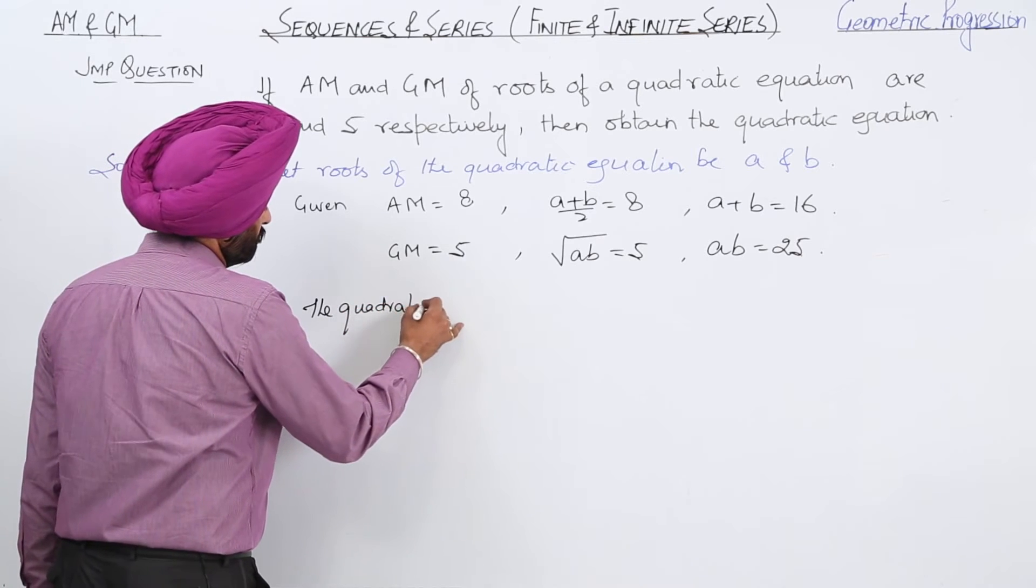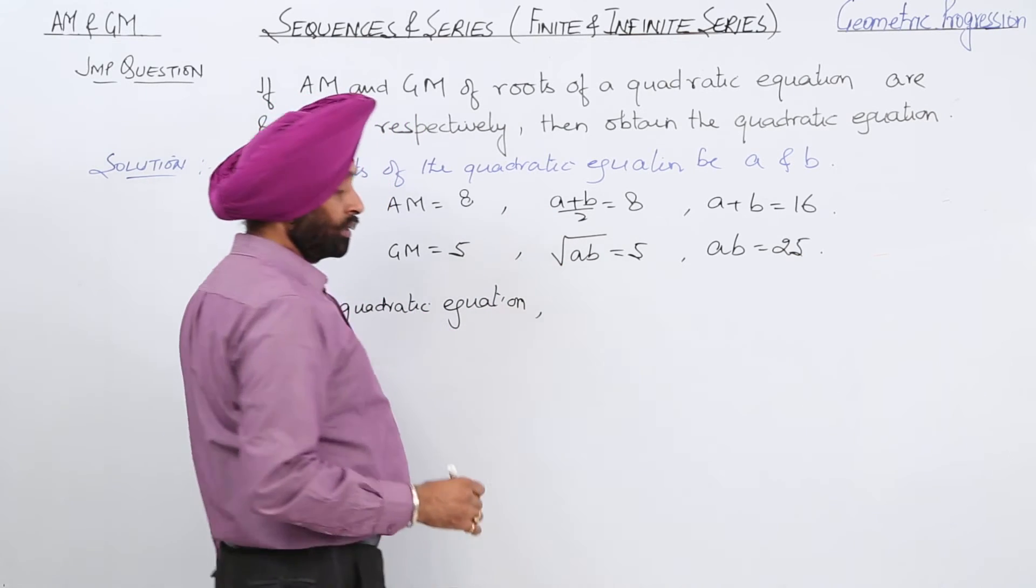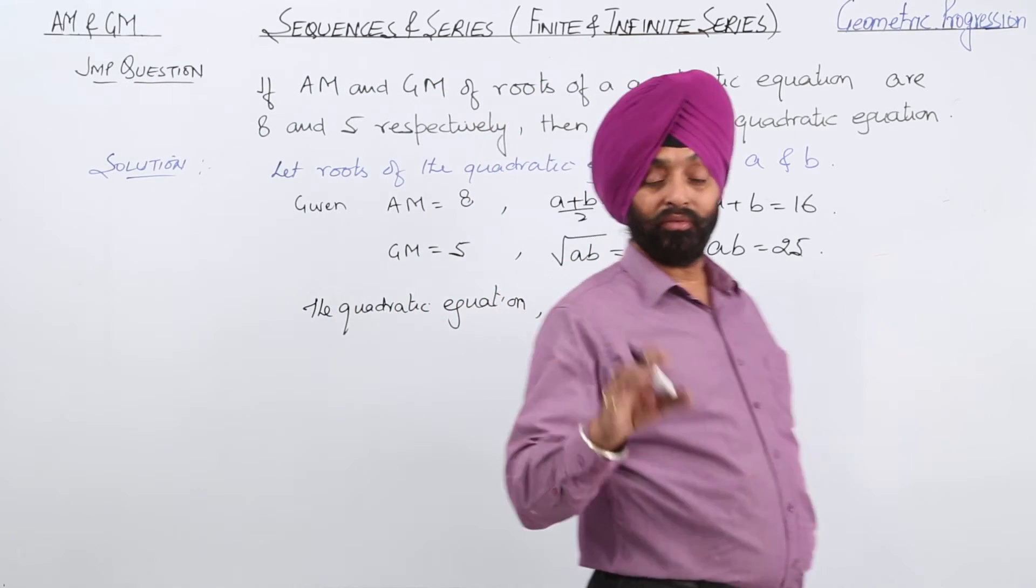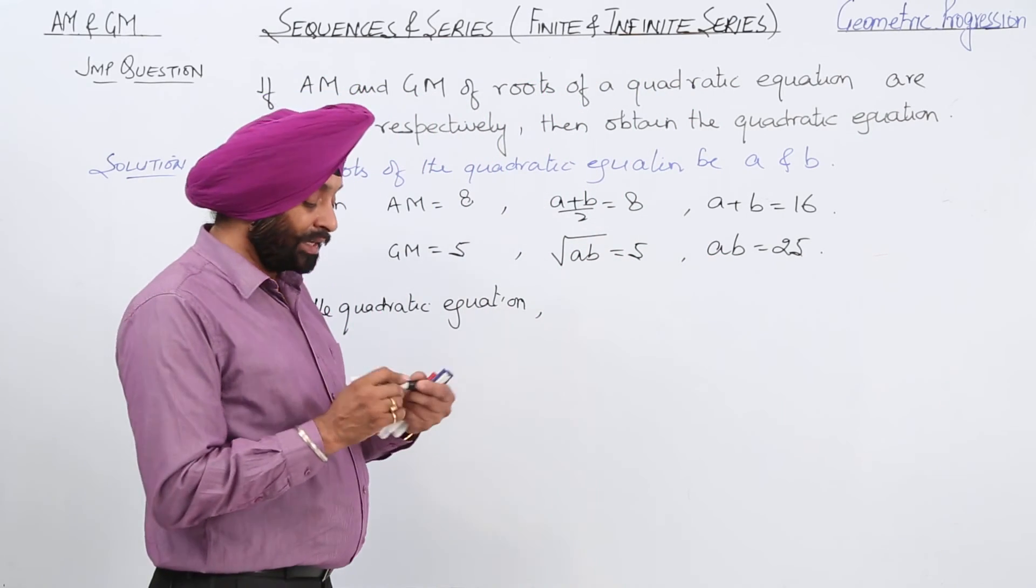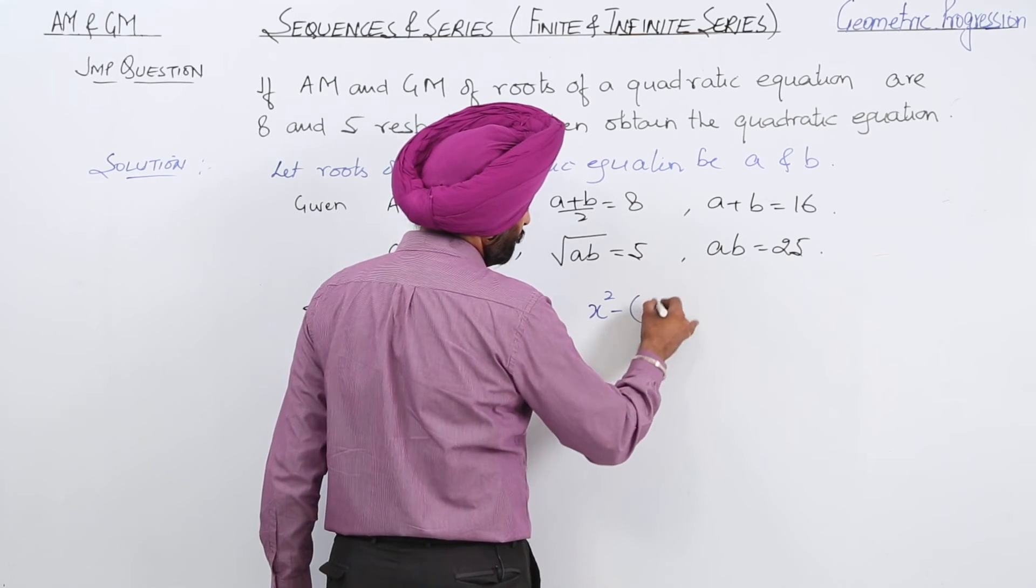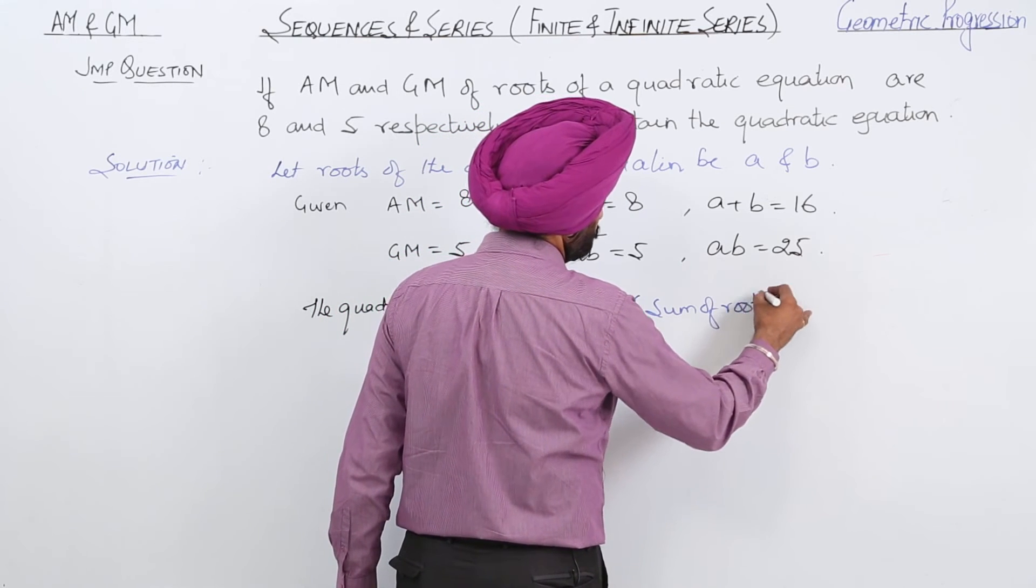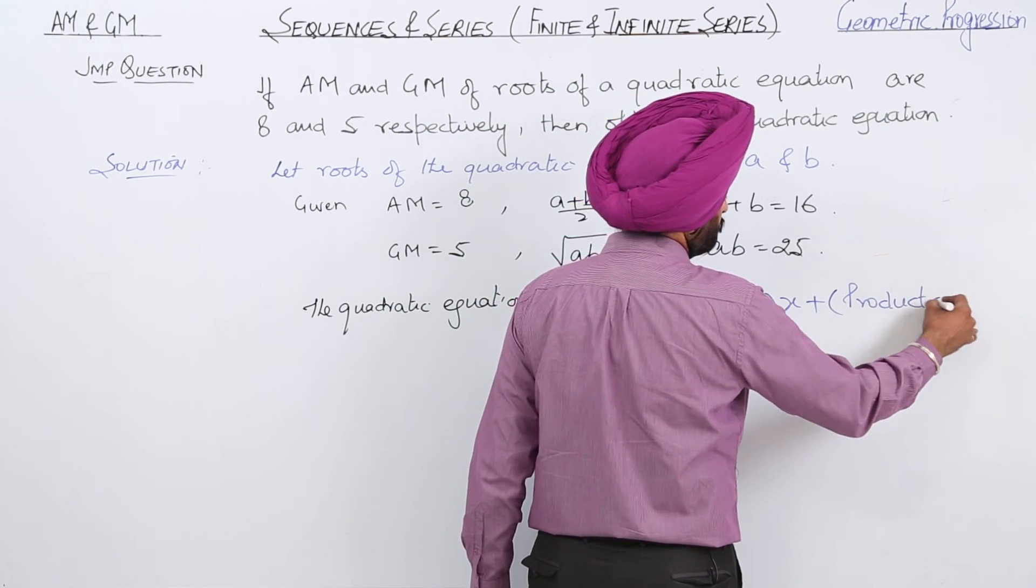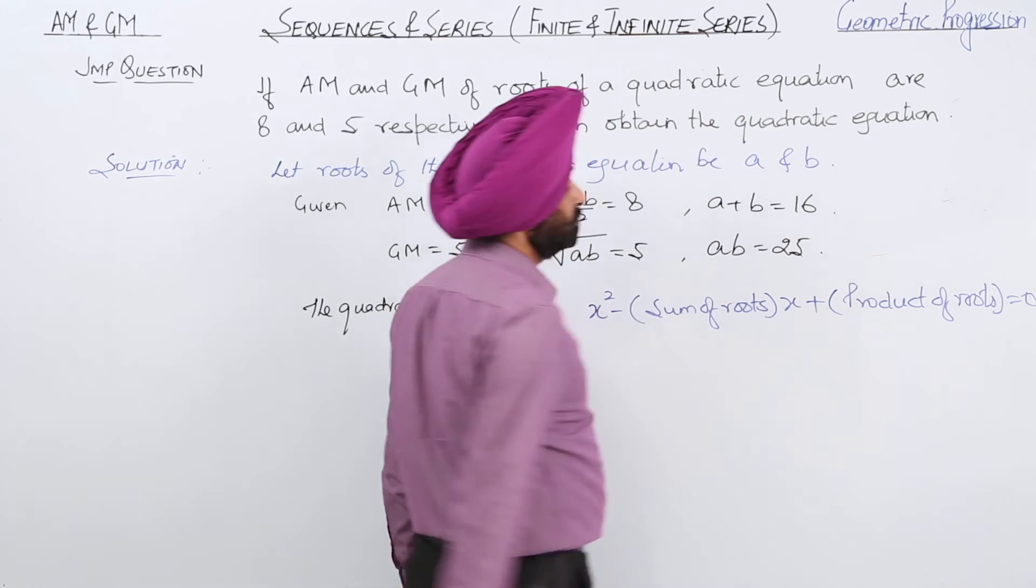Now, what is the quadratic equation? You have done this in junior class. The quadratic equation formula is x² - (sum of roots)x + (product of roots) = 0.